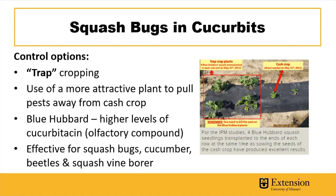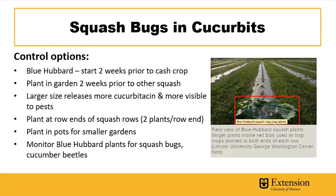Blue hubbard basically pumps out far more cucurbitacin than standard summer squash or pumpkins, allowing insects to find it by that compound. This has been proven effective for the whole squash pest complex — squash bugs, cucumber beetles, and squash vine borers. To make it work, you need to establish the blue hubbards sooner than your cash crop so they're bigger, more visible, and releasing more cucurbitacin before the summer squash is planted. You can plant them at the row ends — two plants per row end — or in pots for small gardens where space is a concern.